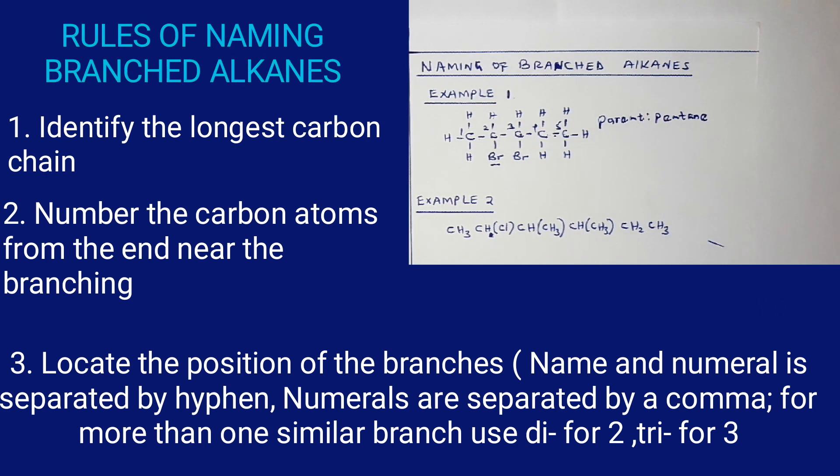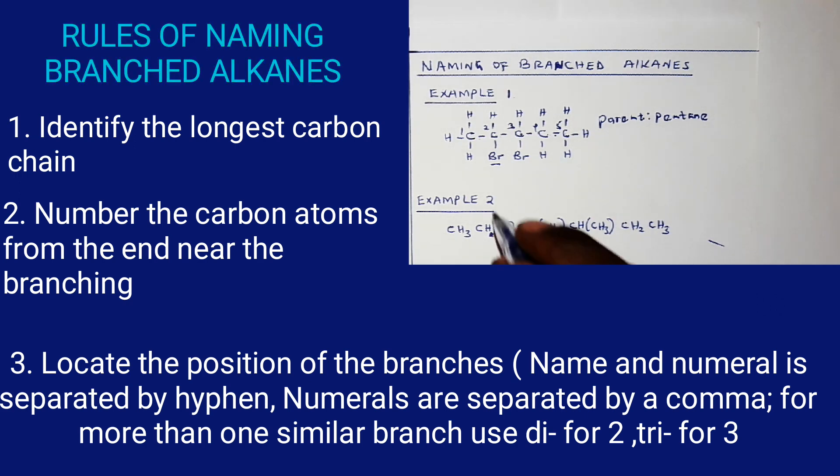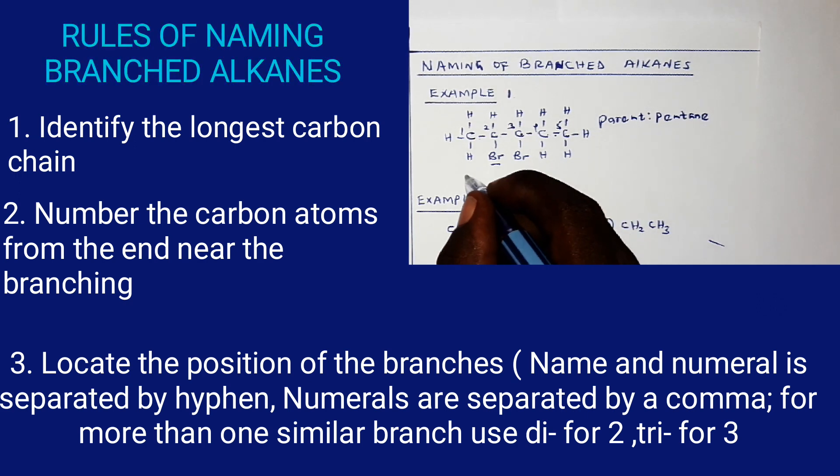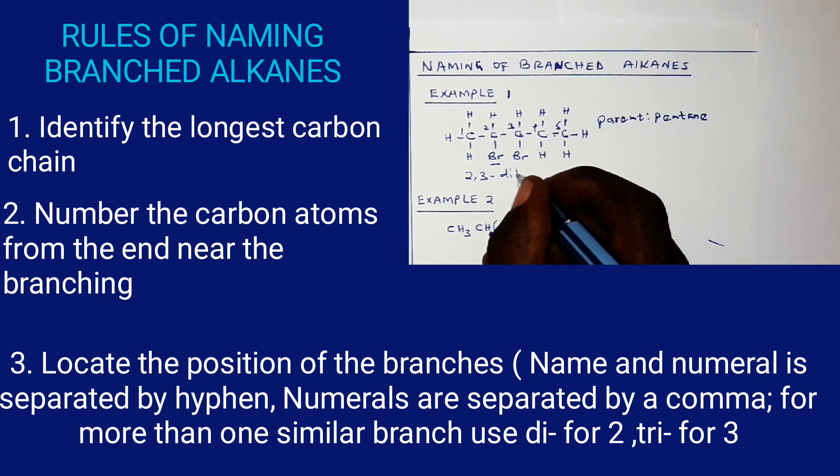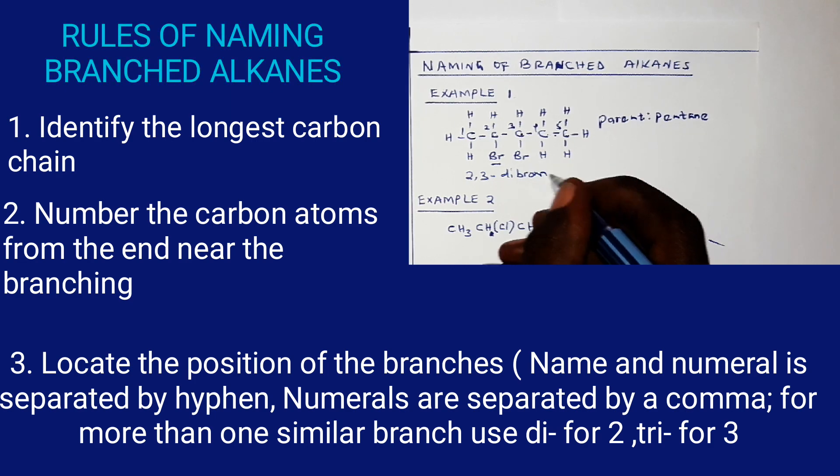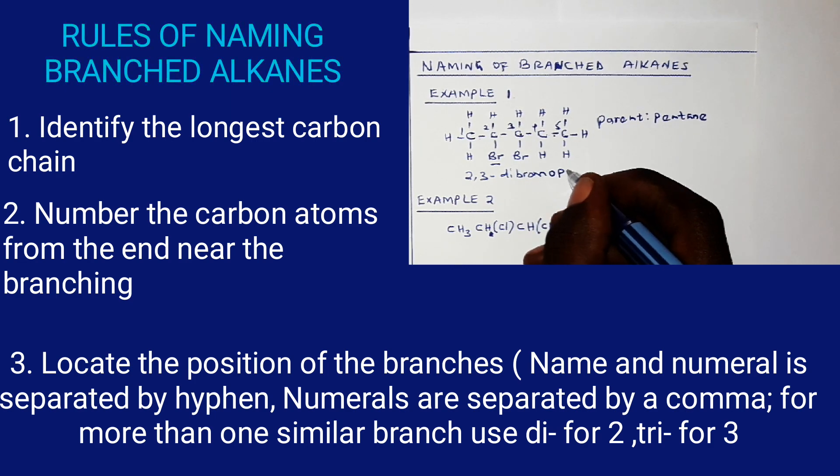As we mentioned earlier, for two similar branches, they are named as di-. So in our case here, we'll name this compound as 2,3-dibromopentane.